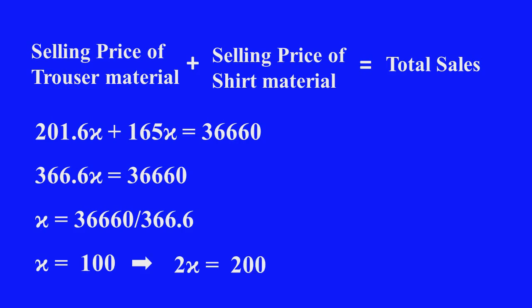Therefore, X is equal to 100. That implies 2X is equal to 200. Therefore, the trouser material bought is 200 meters.